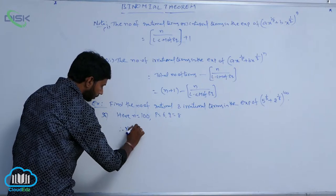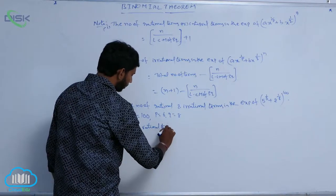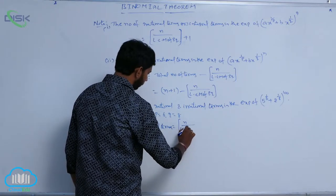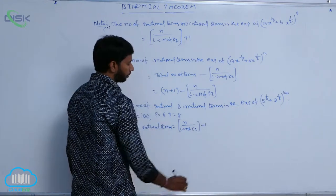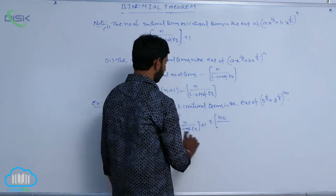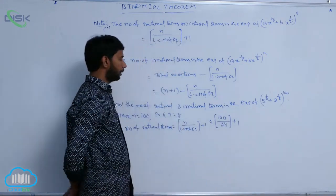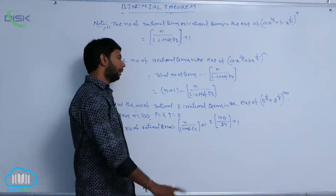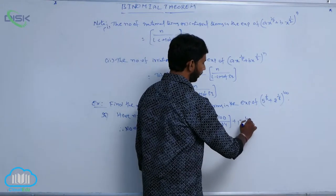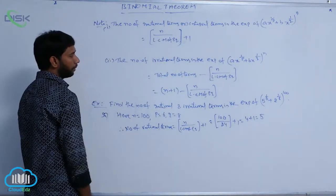The number of rational terms is equal to floor(n / lcm(p, q)) + 1 = floor(100 / lcm(6, 8)) + 1. The lcm of 6 and 8 is 24. So floor(100 / 24) = floor(4.something) = 4. Therefore, the number of rational terms = 4 + 1 = 5.